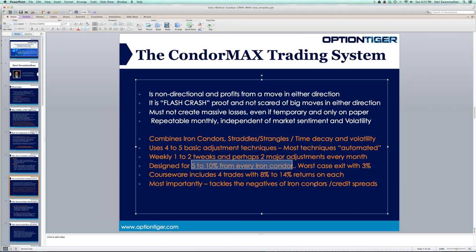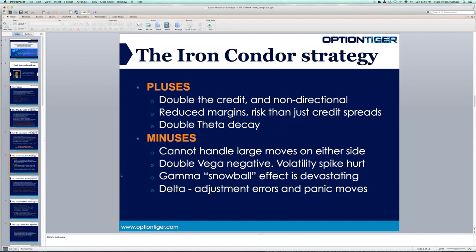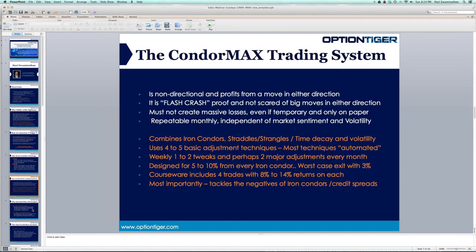Most importantly, the Condor Max tackles all the negatives of iron condors — and by definition, if you can tackle the negatives of an iron condor, you're tackling the negatives of credit spreads as well. You can put credit spreads and iron condors as much as you want; as long as you follow the method, you should be able to make every iron condor pay a positive return. Worst case is two to three percent, but most of the time, if you're careful enough, you can do much more.